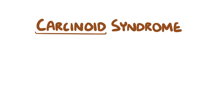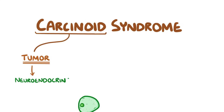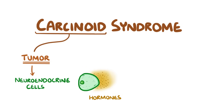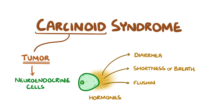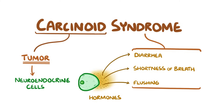Carcinoid refers to a specific type of tumour, a carcinoid tumour, which causes neuroendocrine cells to secrete hormones. And this leads to all sorts of symptoms, like diarrhoea, shortness of breath and flushing. So when these symptoms develop as a result of a carcinoid tumour, it's called carcinoid syndrome.